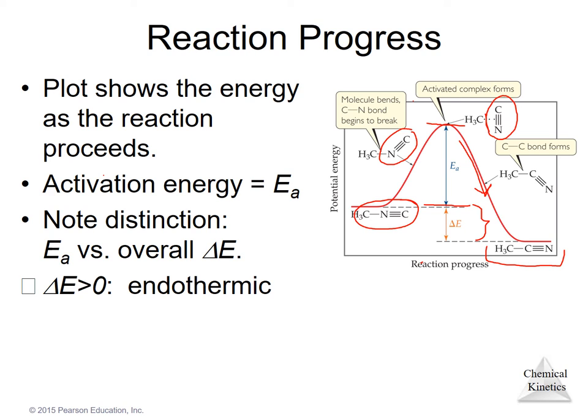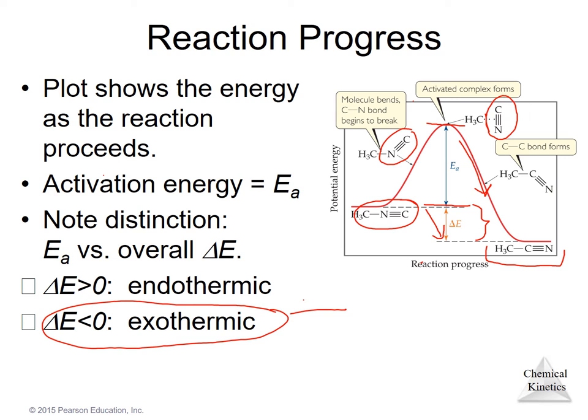Delta E for the reaction can be positive or negative. If it's positive, the reaction is said to be endothermic, and if it's negative, the reaction is said to be exothermic. And notice that in this case, we go down in energy, so that's a negative delta E, and we have an exothermic reaction.